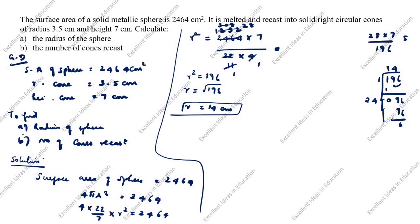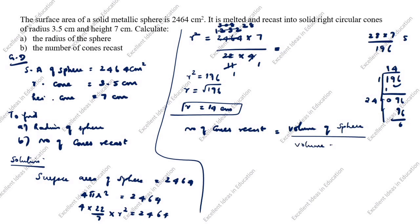Now for the second part: number of cones recast equals volume of sphere divided by volume of cone. Volume of sphere formula is (4/3)πr³, and volume of cone formula is (1/3)πr²h.